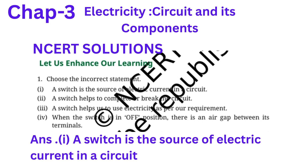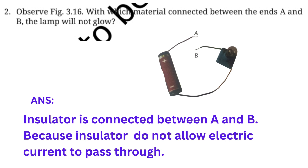Question number one: Choose the incorrect statement. Four options are given. Option 1: cell is the source of electric current in a circuit. Option 2: switch helps to complete or break the circuit. Option 3: switch helps us to use electricity as per requirement. Option 4: when the switch is in on position there is an air gap between its terminals. The correct answer is option 4 — that is the incorrect statement.